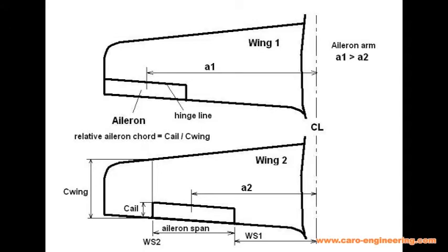The ailerons are needed for roll control and in order to provide that function they need to be able to create a rolling moment, which is a moment around the airplane x-axis.